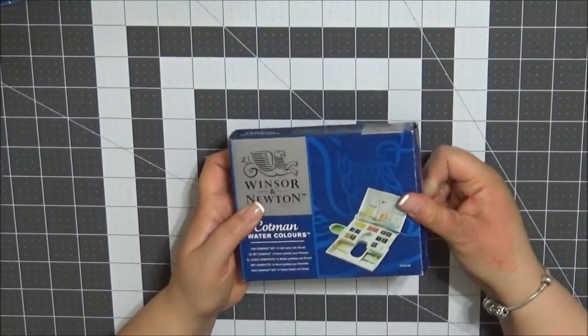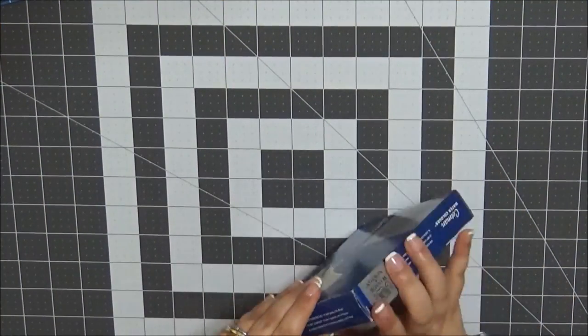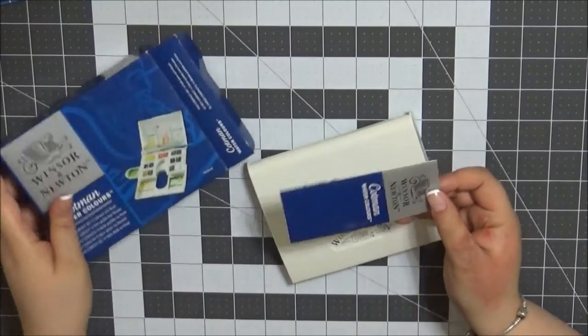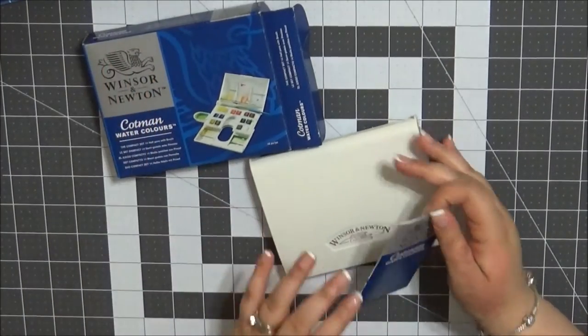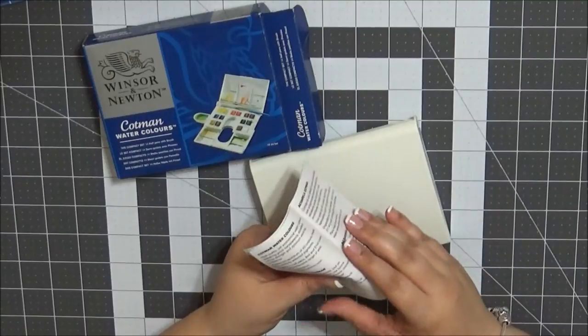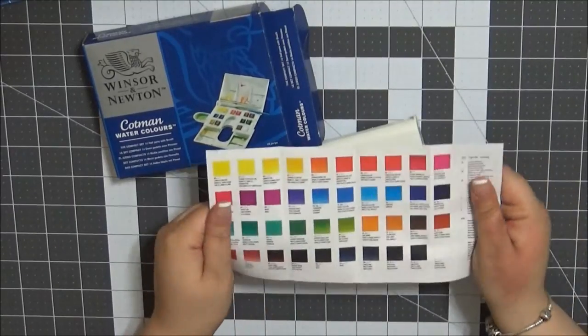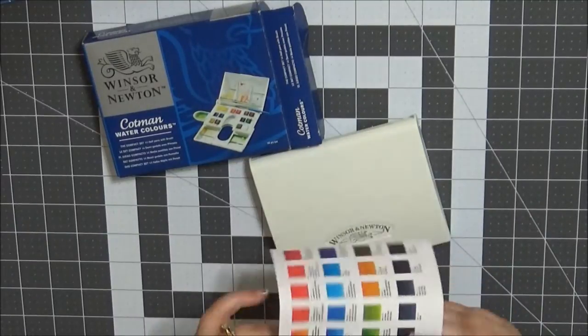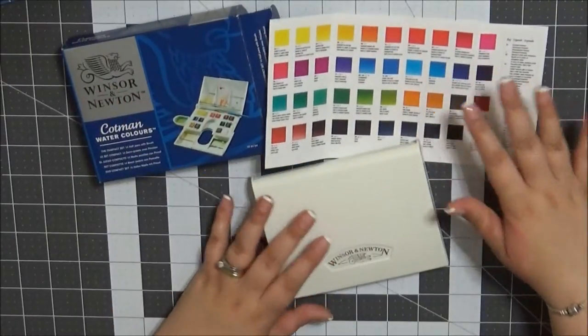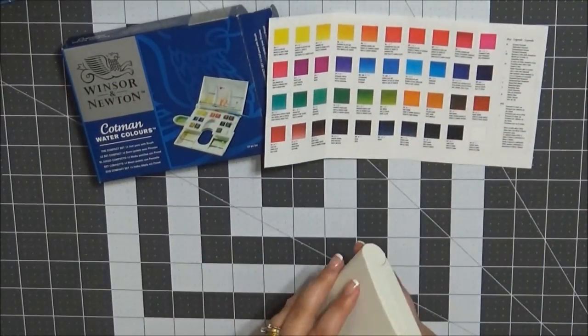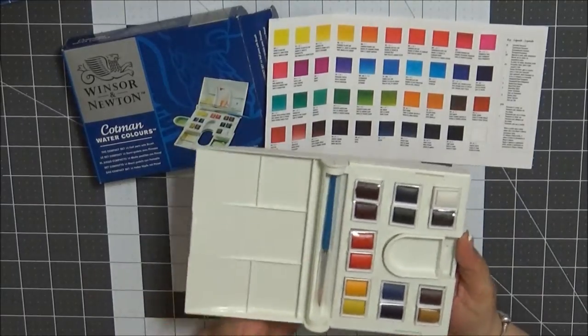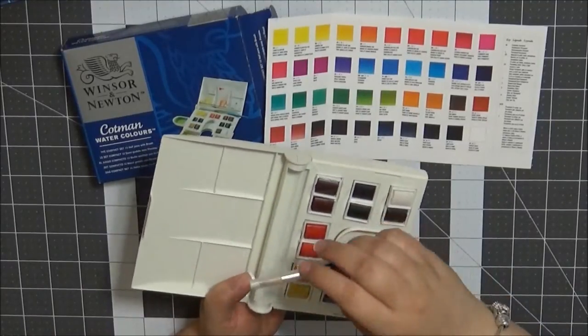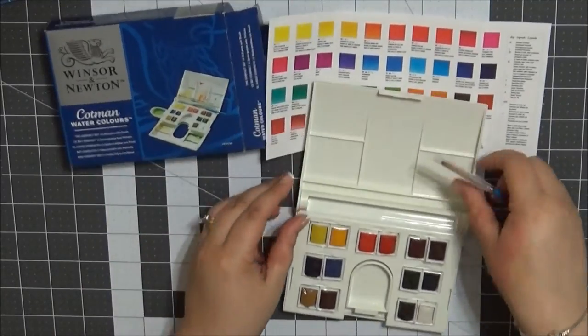So here is the set and when you open the packaging it comes in this nice little plastic case with this little brochure that has all their watercolor pans, half pans or pans, full ones. And some of them are actually in this set and that's the case. On the left hand side there's a palette for mixing. It comes with their brush as well. I believe the size is 111 paintbrush.